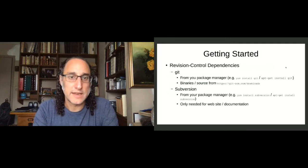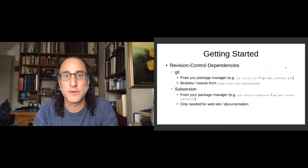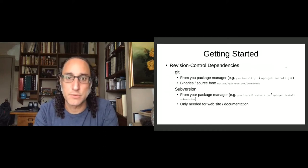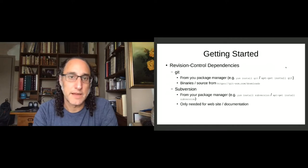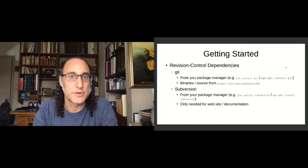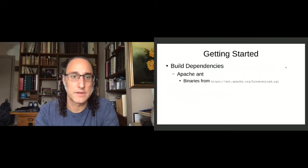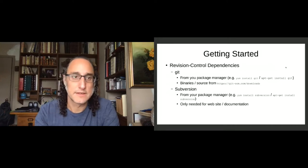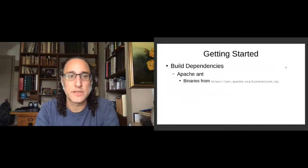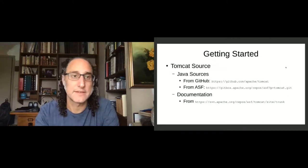To get Git and Subversion, you can usually get those from your package manager if you're on a Linux distribution. For Windows, Git SCM has binary downloads available. You'll also need Apache Ant, and you can get those binaries from the Ant download site.